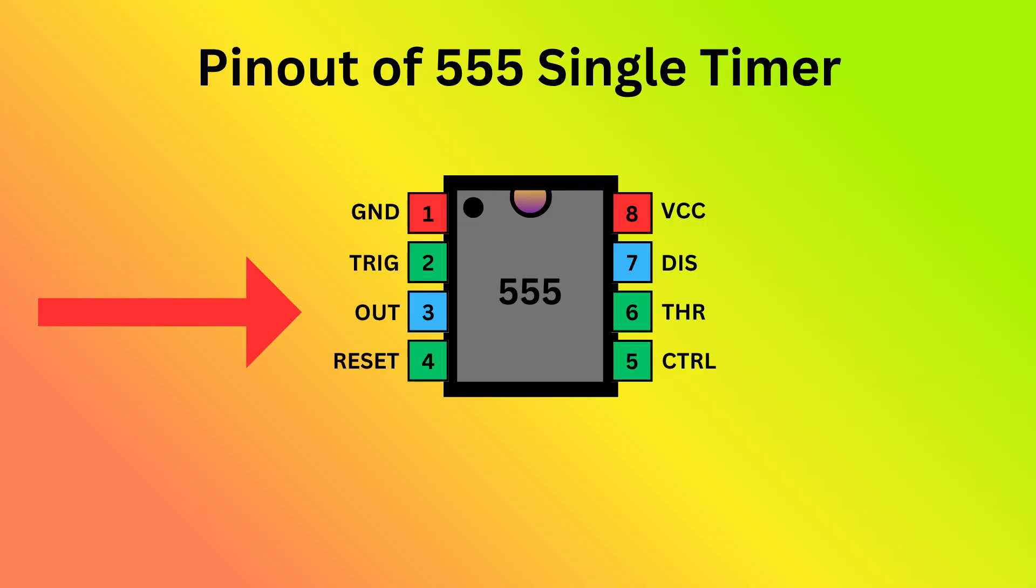Pin 3 is output. It delivers the result of the timer's operation based on its mode, either monostable, astable, or bistable. Pin 4 is reset. It is used to reset the 555 timer's internal flip-flop.